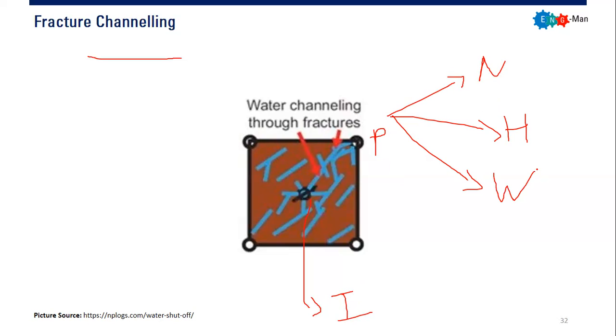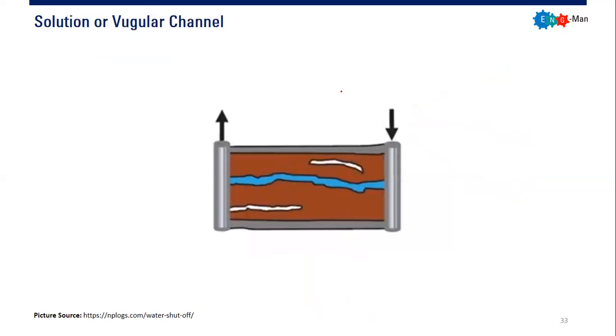And fortunately, you can assess the existence of fractures using observations through well testing, through the logs, and through core analysis, or maybe just an analytical approach by comparing the production rate and injection rate. Something like that, you can infer whether there are fractures connecting your injector and producer or not. So that's fracture channeling, and the next one is solution or vugular channel.